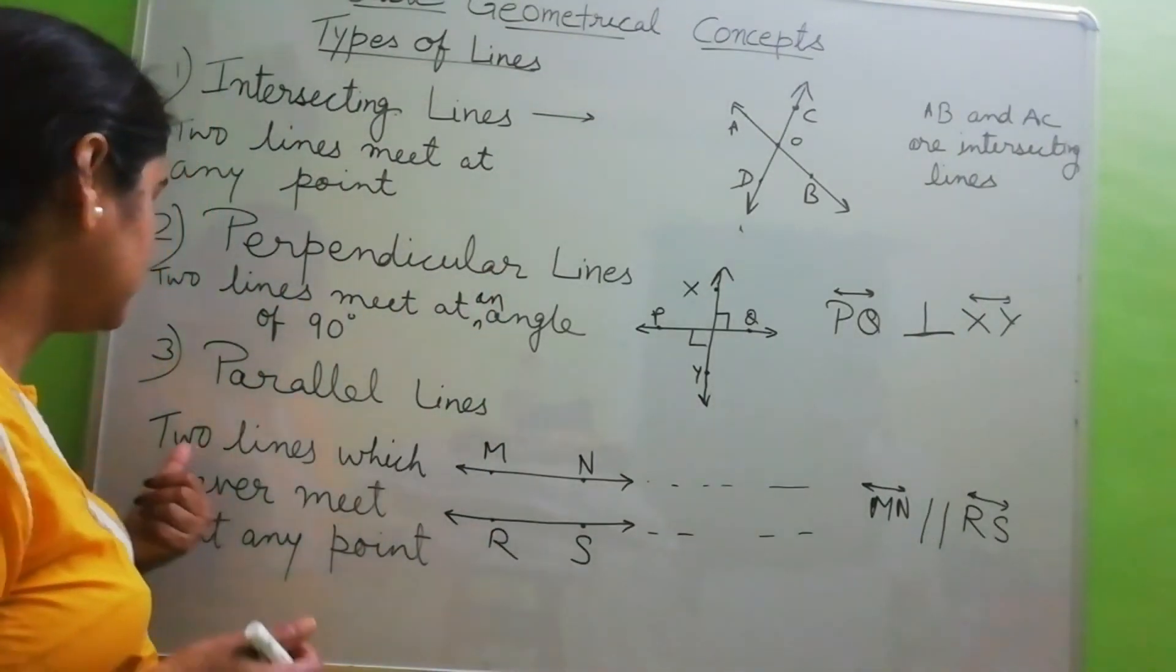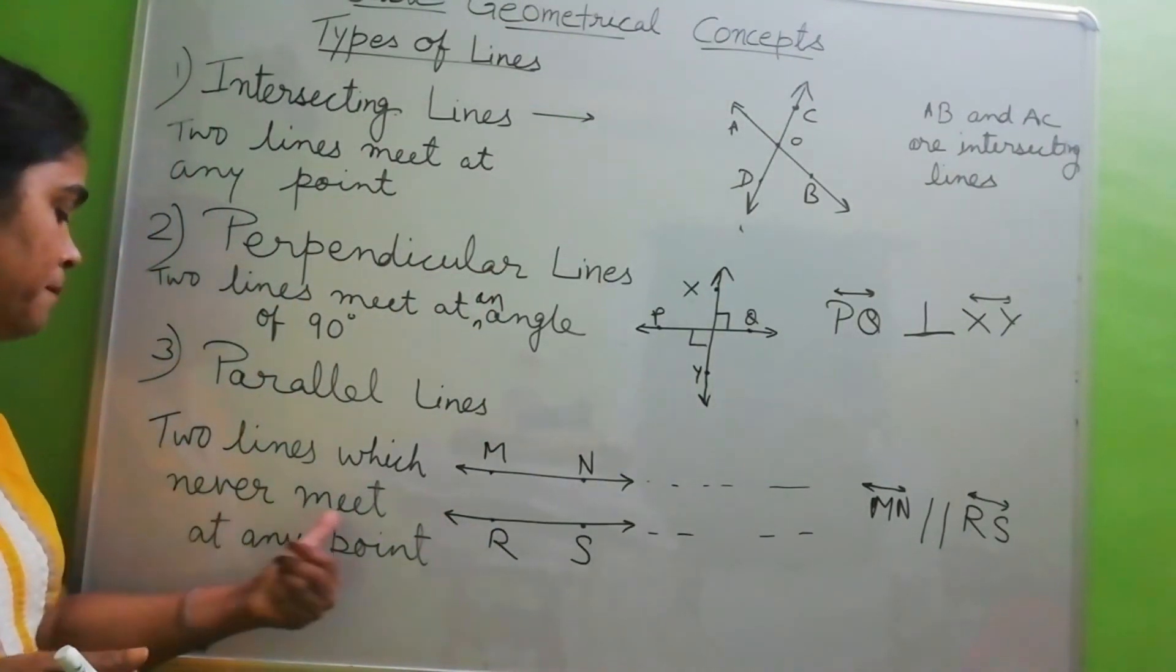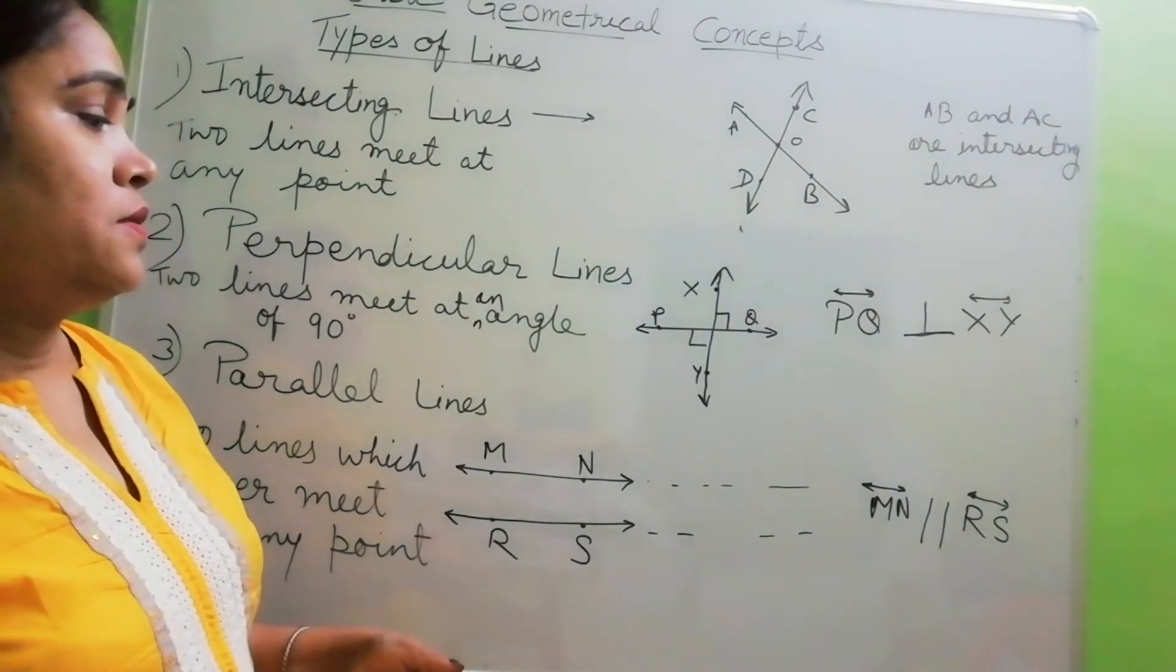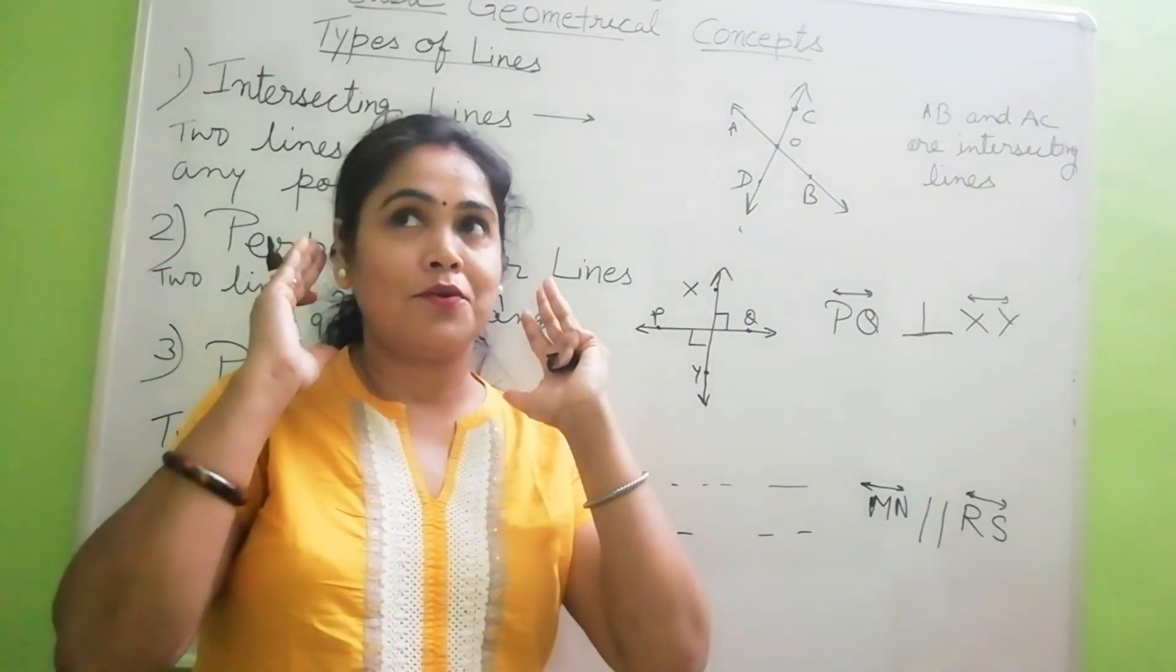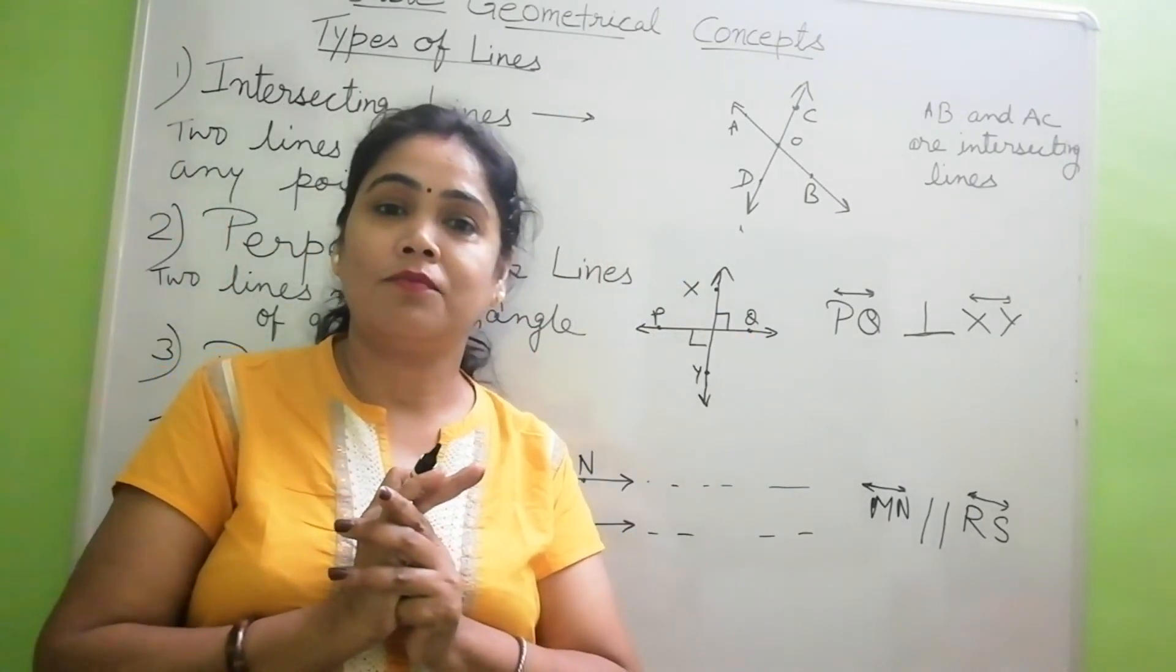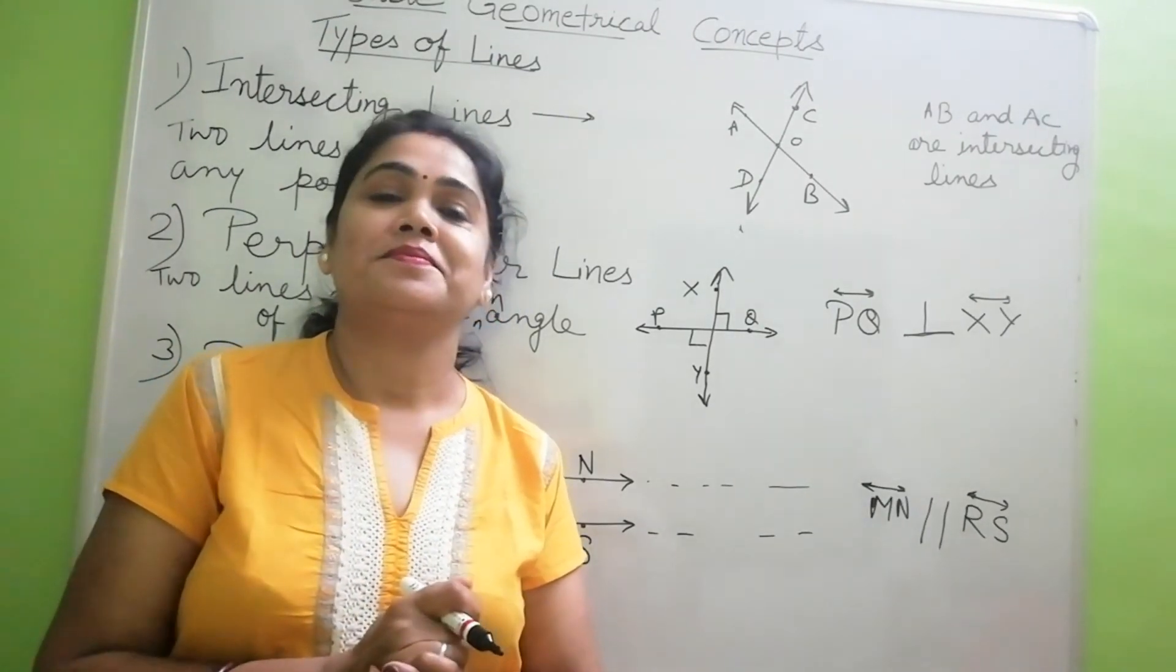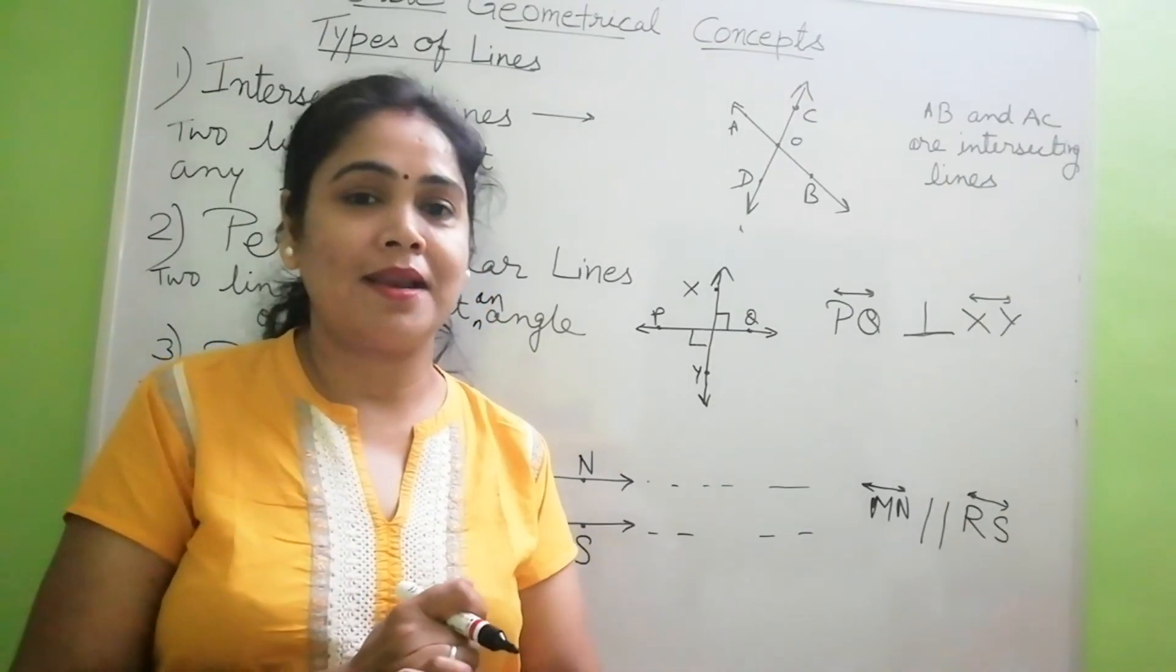Next, parallel lines. Two lines which never meet at any point. So you can think of railway track. Will they meet at any point? No. So that is an example of parallel lines.